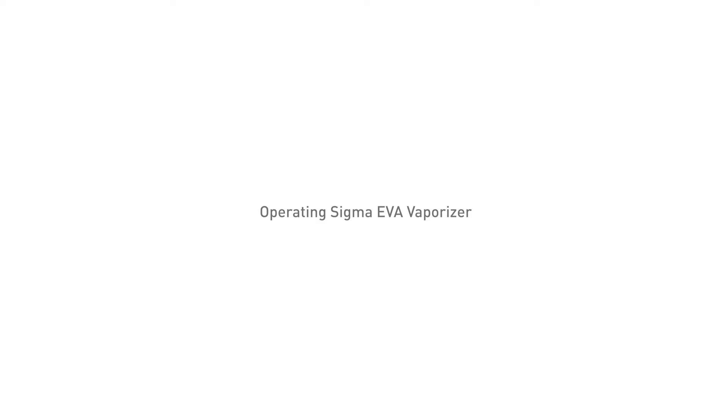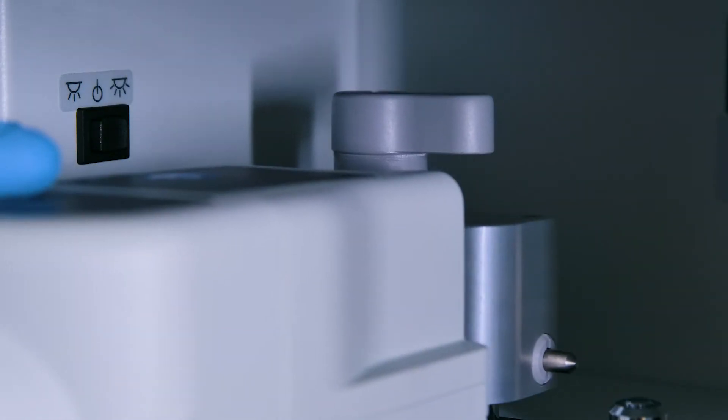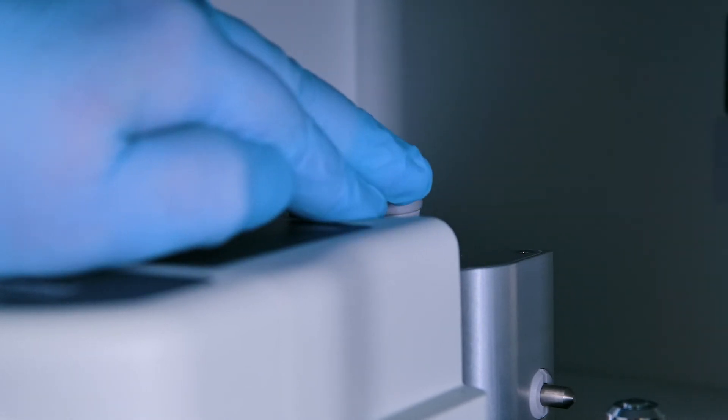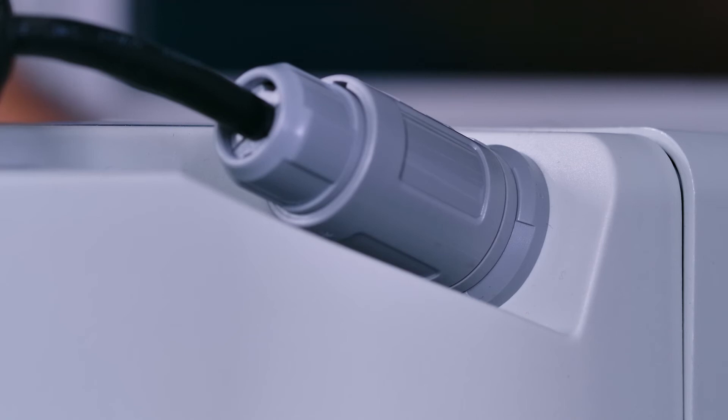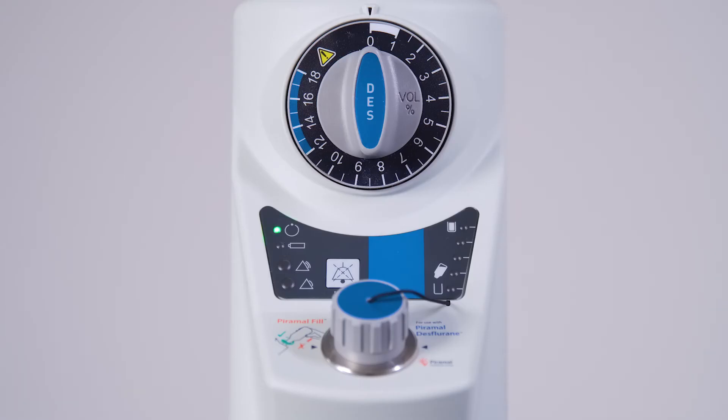Operating Sigma EVA Vaporizer. Check that the vaporizer is fitted correctly to the anesthetic machine. Connect the electrical power supply cable to the socket on the vaporizer top assembly. Perform a self-validation check. All indicators will flash, accompanied by a repeated single audio tone.